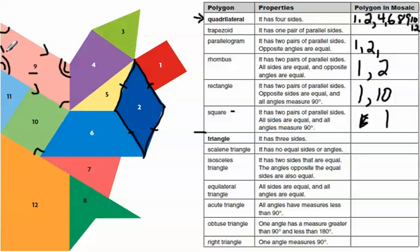These lines are parallel, and these lines over here are parallel. So number nine is a parallelogram, and number ten, which is a rectangle, is also a parallelogram.